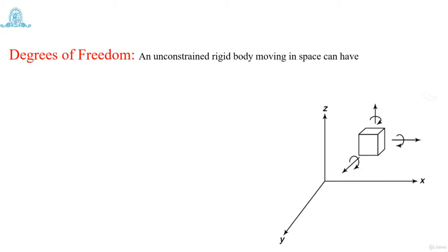In this figure you can see we have taken a local coordinate system with an x-axis, y-axis and z-axis. We have taken one block, and that block is considered as an unconstrained rigid body. Why unconstrained? Because it is not restricted to any motion or attached to anything.